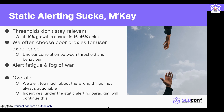Another effect we tend to see in this kind of alerting and monitoring is that we often choose proxies for user experience, like CPU usage for latency — experienced user latency, for example. And those proxies are often chosen because they're easier to choose, sometimes because the right metrics are hard to get. And there's often an unclear correlation between the threshold and the experienced user behavior.